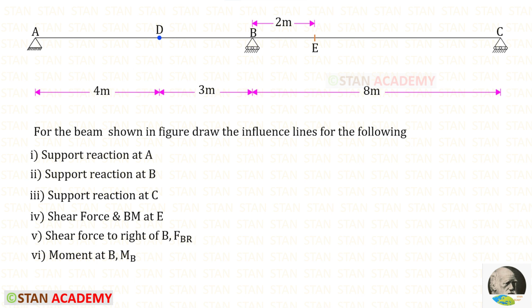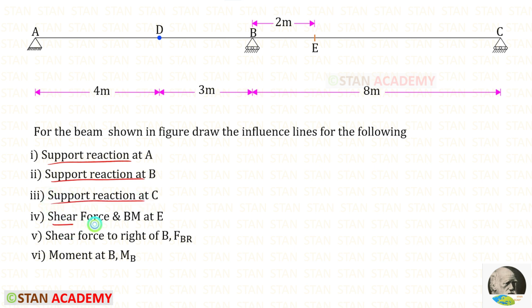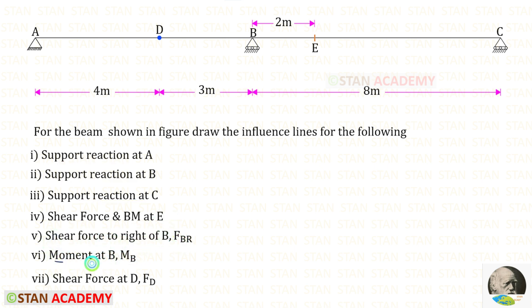Hello everyone, today we are going to do a problem based on influence line diagrams. Let us read the question one time. For the beam shown in the figure, draw the influence lines for the following: support reaction at A, support reaction at B, support reaction at C, shear force and bending moment at E, shear force to the right of B, moment at B, and shear force at D.